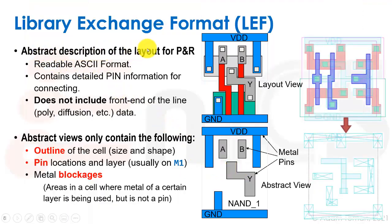Let's look at the LEF again. So the LEF is an abstract description of the layout for place and route. It contains detailed pin information, so that's really important that we have the pins over here. You can see that we take this layout and we make the LEF, we have the information about the pins, where they are, where we're allowed to connect to it. It only contains, it does not include the front end of the line, poly, diffusion, etc. data, which is the answer that we just gave. It only contains the outline of the cell, the size and shape, the pin locations, usually on M1, on metal 1, and the blockages where we should not route through the cell. So if this is a type of an illustrative example of what a LEF looks like, here we have the VDD pin, the ground pin, the Y pin, the A pin, and the B pin, and maybe there would be some blockages within.